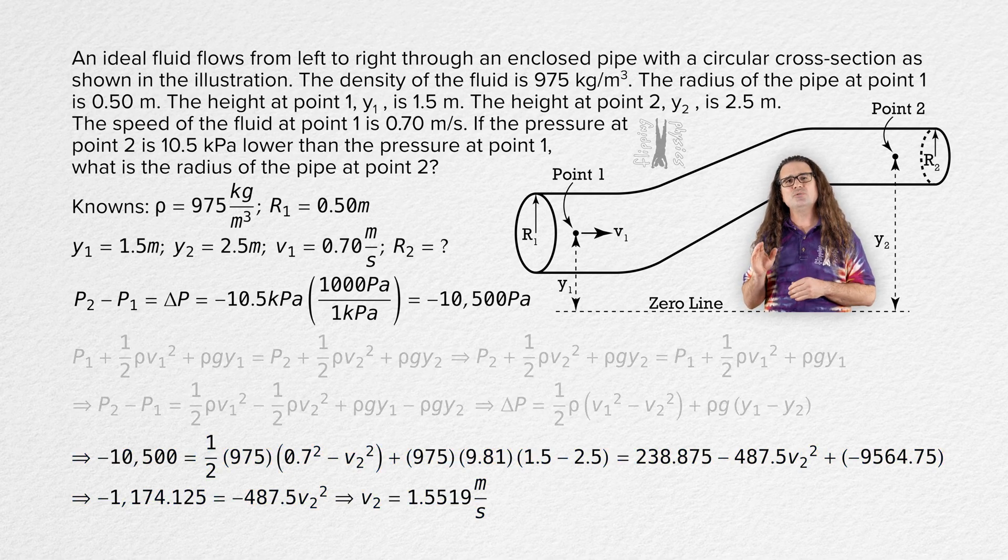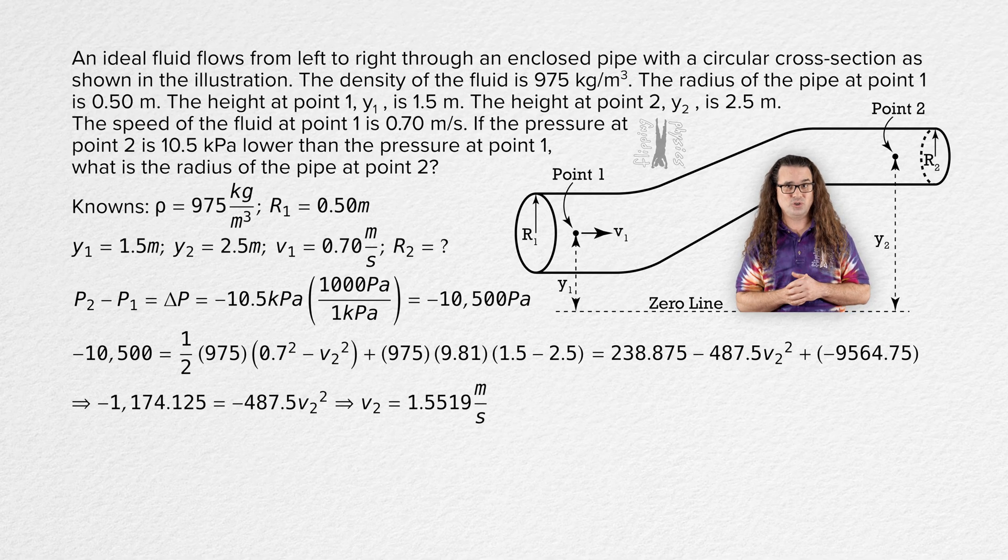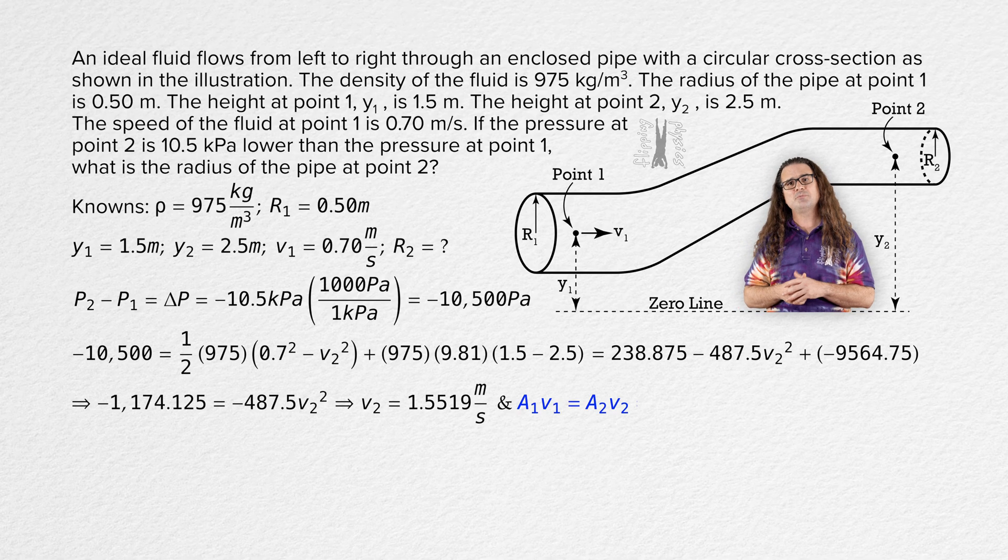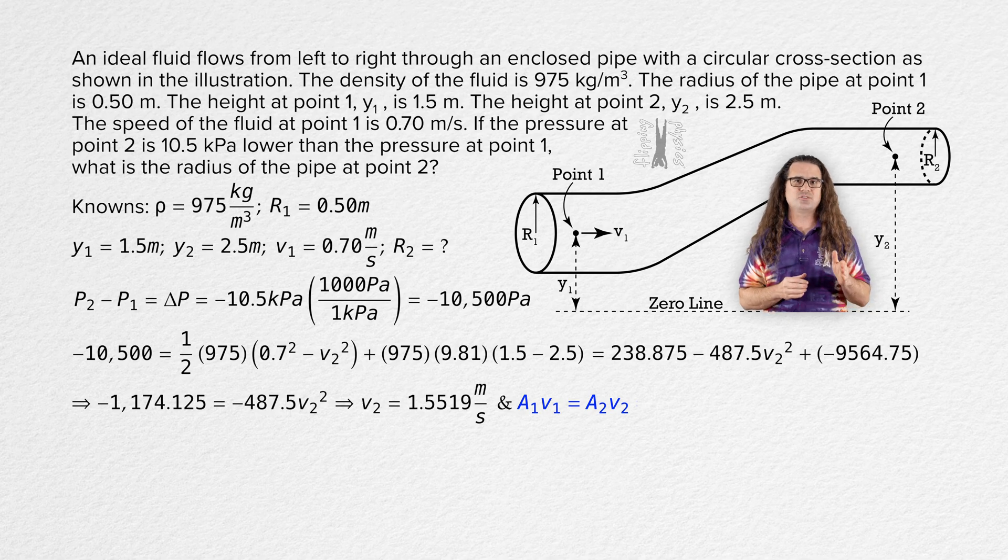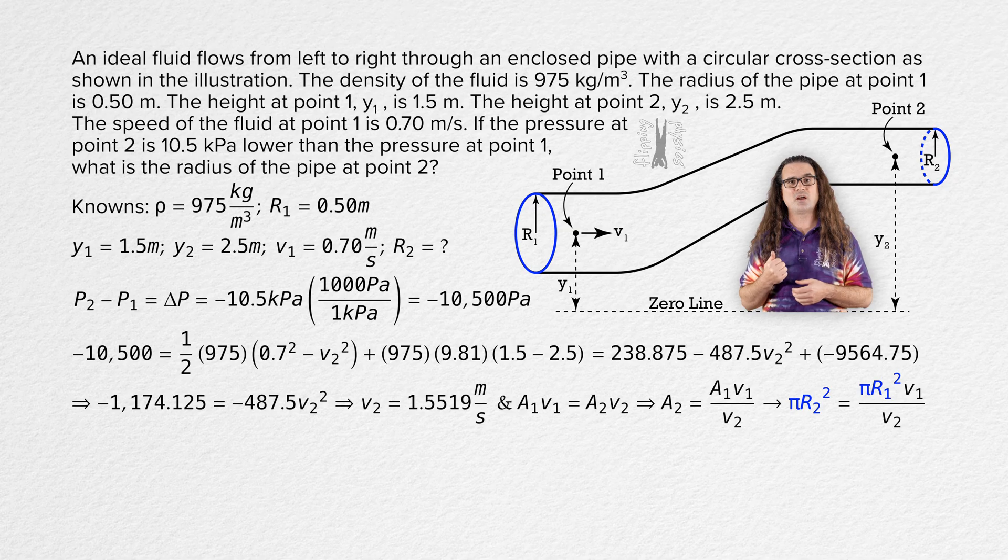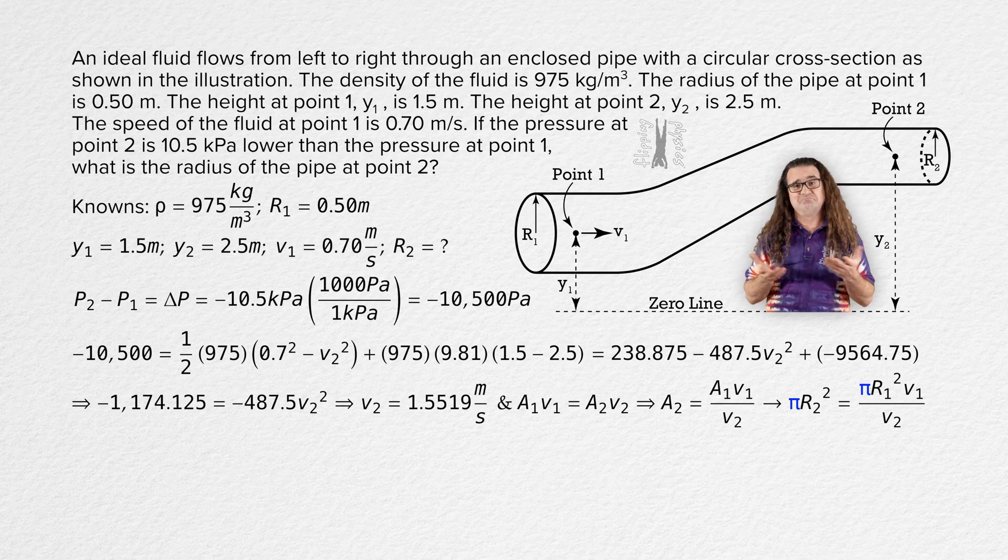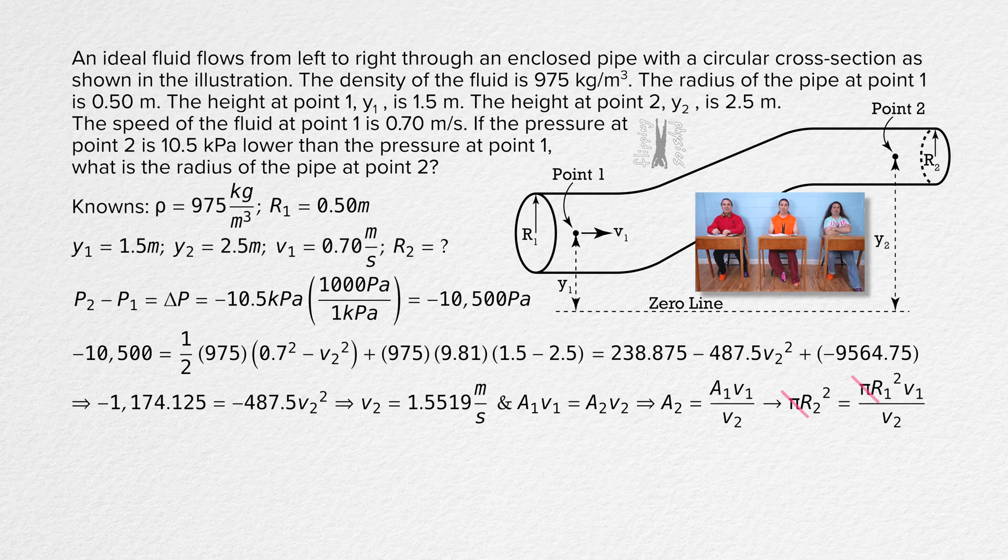And now we can use the fact that the volumetric flow rate is constant to solve for radius 2. Cross sectional area 1 times speed at point 1 equals cross sectional area 2 times speed at point 2. Solve for cross sectional area 2. And the cross section of the pipe is a circle, so we substitute pi times radius squared in for each of the cross sectional areas. Oh, can we? Does pi cancel? I think it does. I don't know. Sure. Everybody brought pi to the party.